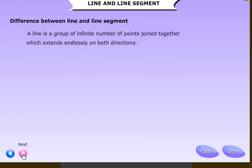Line is a group of infinite number of points joined together, which extends endlessly on both directions. AB is a line. The arrows on both ends says it can be extended freely on both sides. Line AB does not have fixed length since it goes endlessly in both directions.